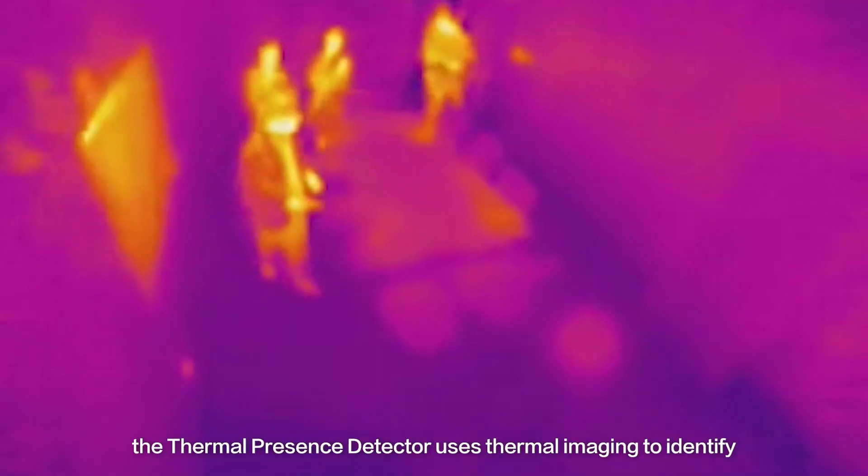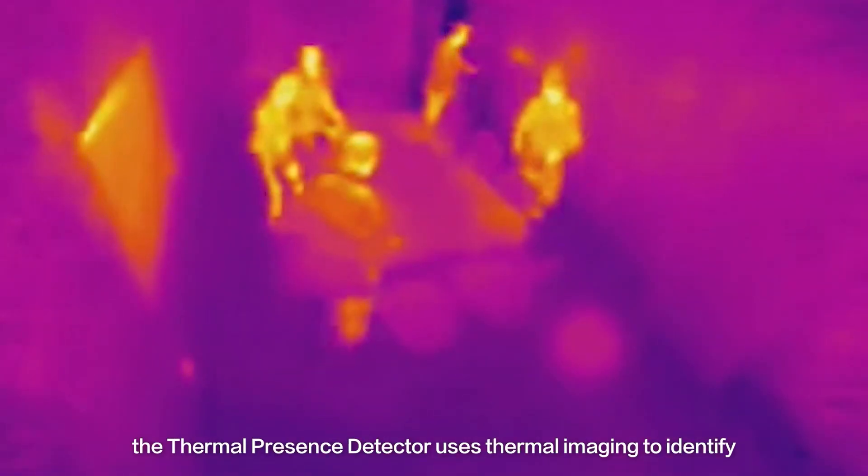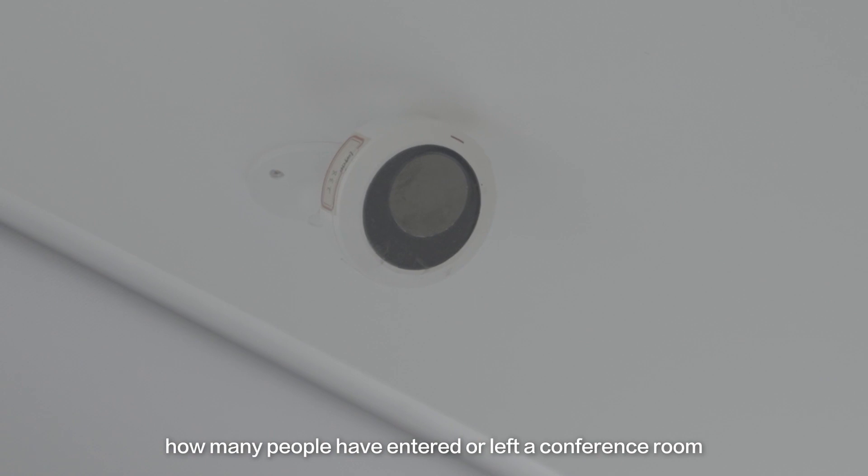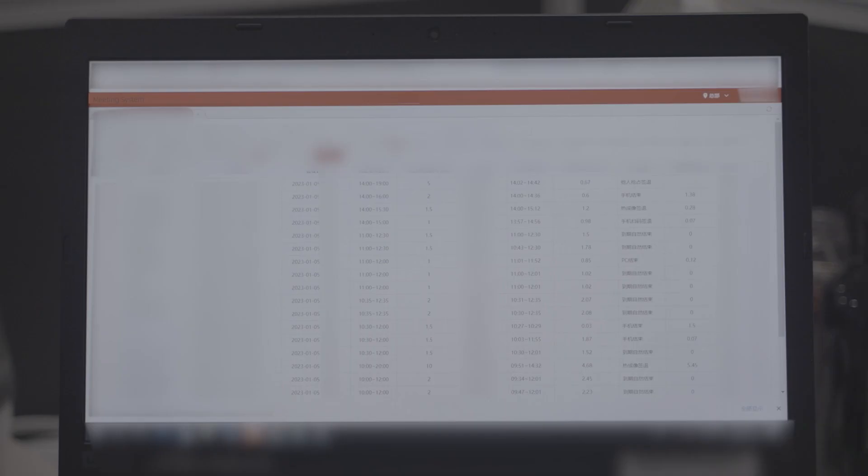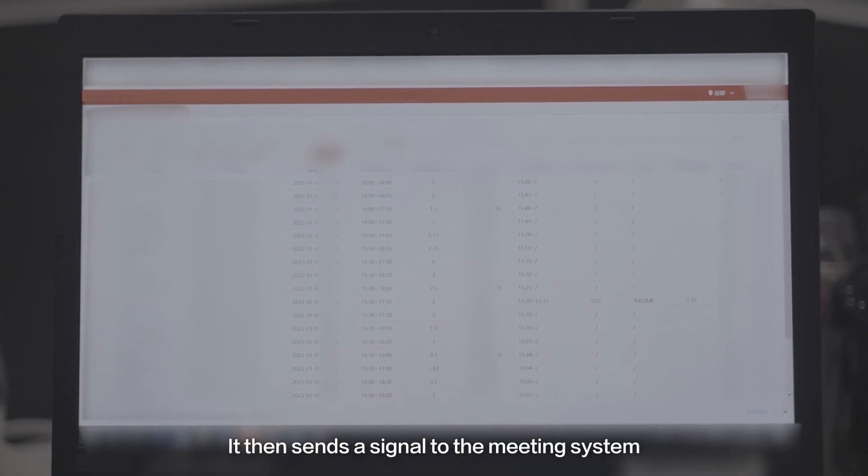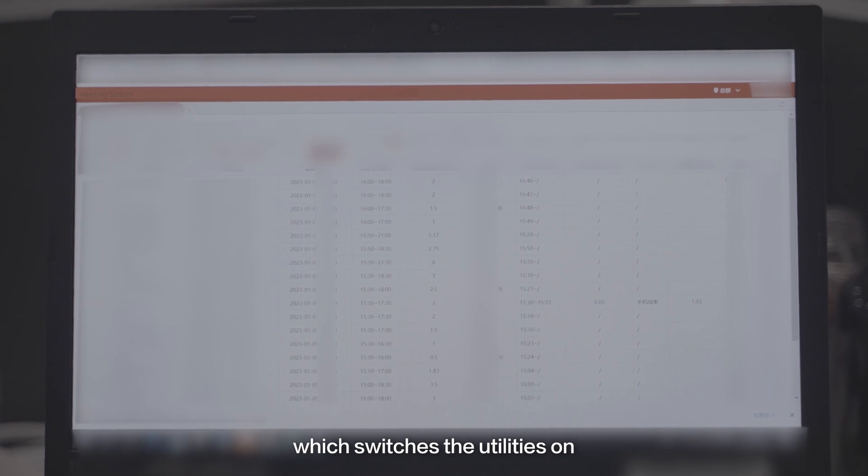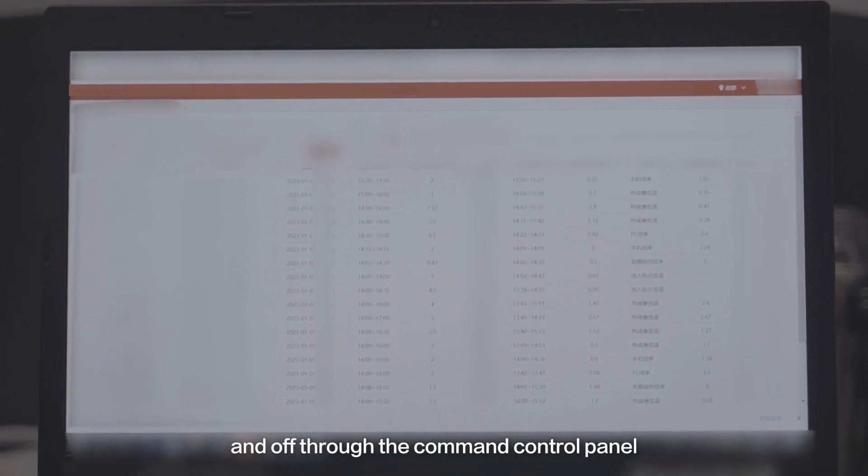Here's how it works. The thermal presence detector uses thermal imaging to identify how many people have entered or left a conference room. It then sends a signal to the meeting system, which switches the utilities on and off through the command control panel.